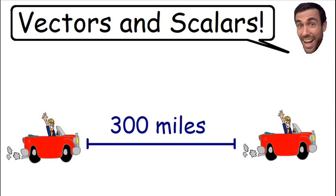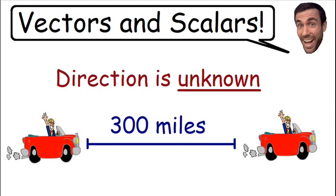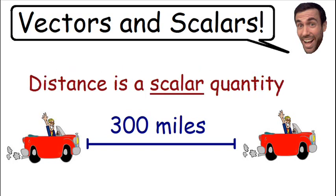Now the direction in which we travel is not given to us. We do not know if we travel 300 miles north or south or to the right or to the left. The direction is not given to us. The only thing that's given to us is the distance or the magnitude of how far we traveled. So therefore distance is a scalar quantity because it only has a magnitude and the direction is unknown.